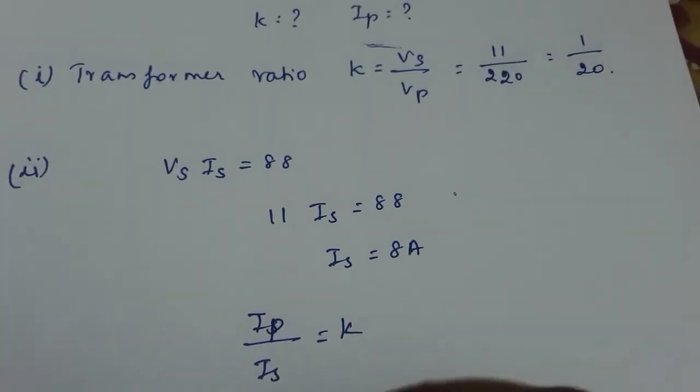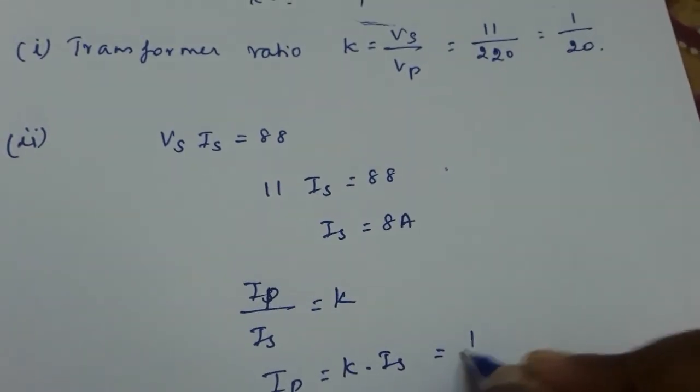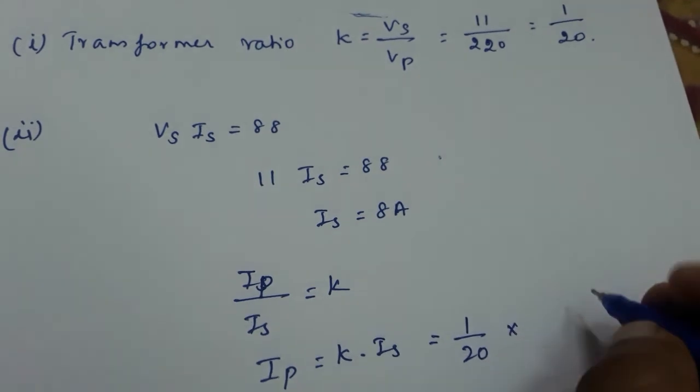We know Ip/Is is equal to k, so Ip is equal to k into Is, that is 1 by 20 into 8.